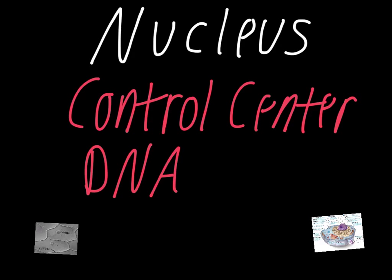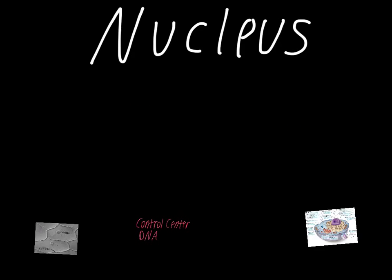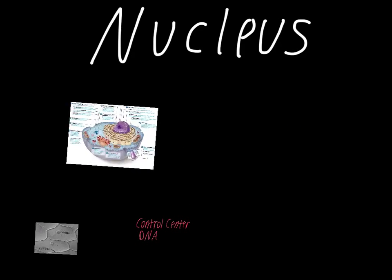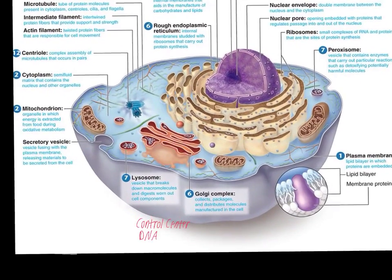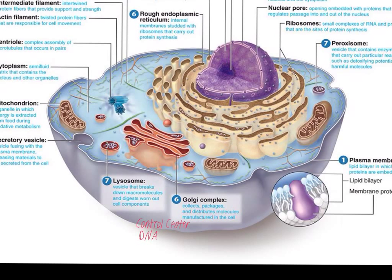Without the nucleus, the cell itself couldn't exist. To give you an idea of what this looks like, we've got our animal cell here, and the nucleus is up here at the top. This one is usually the largest organelle in an animal cell. It has a few different parts to it.